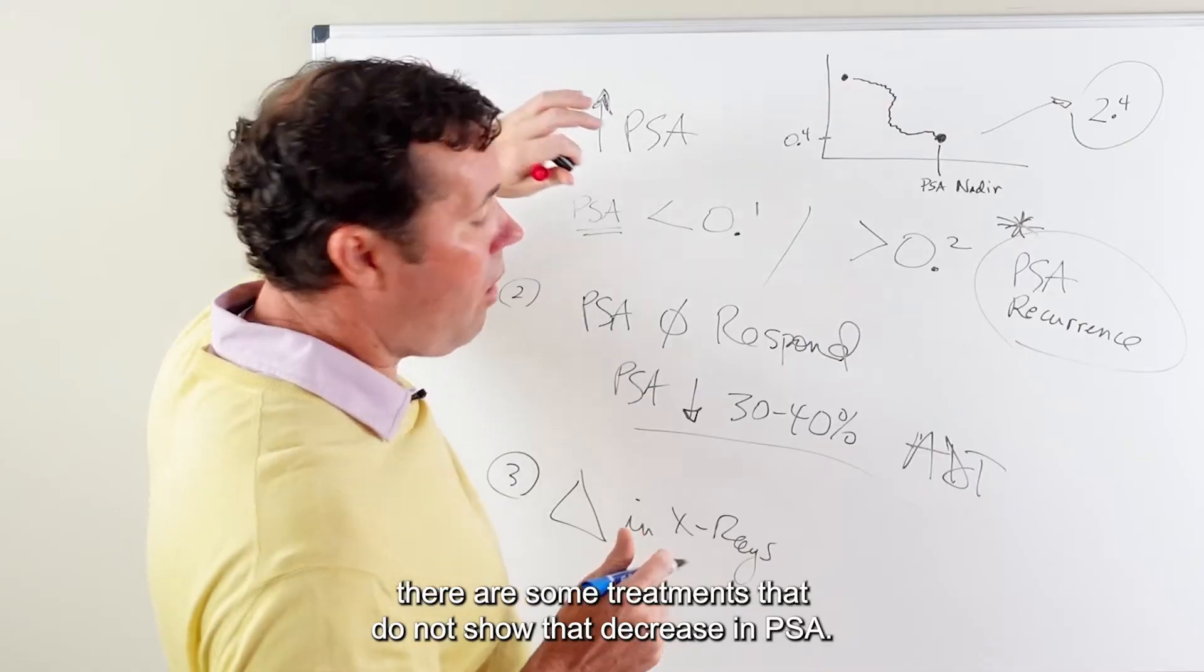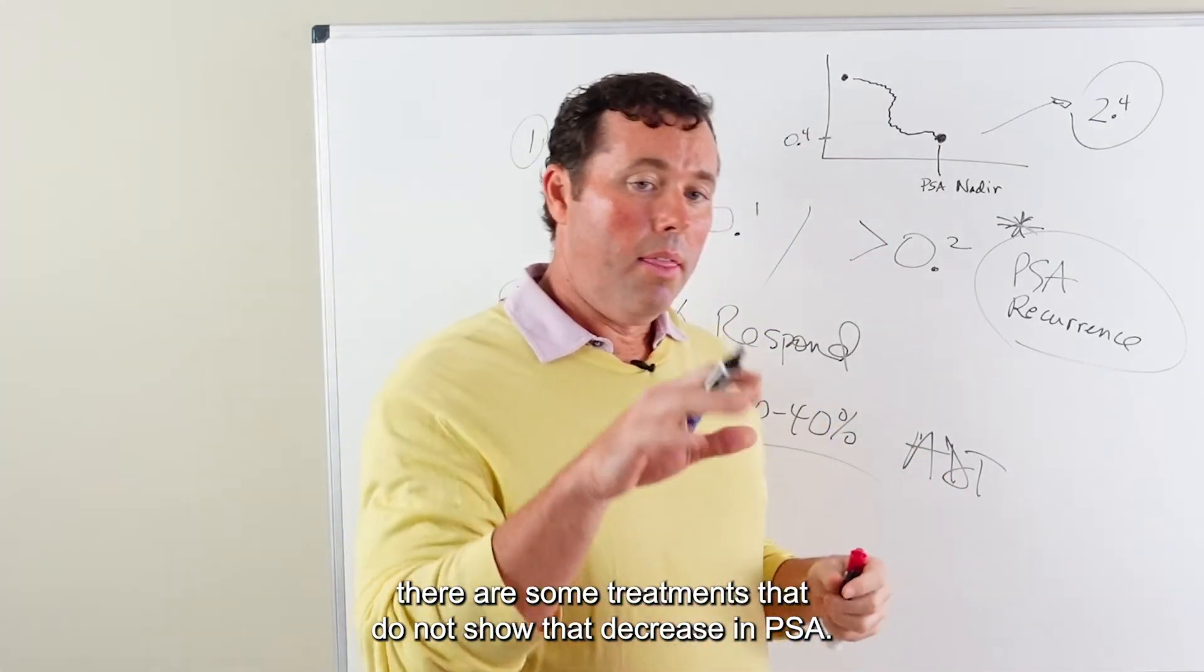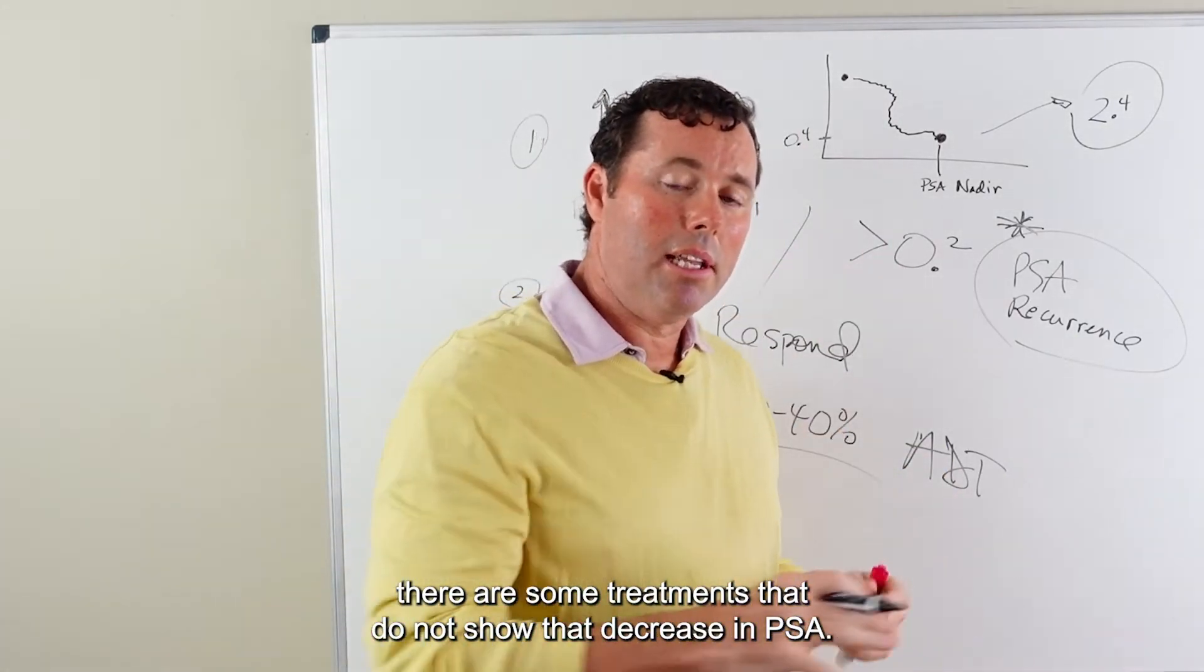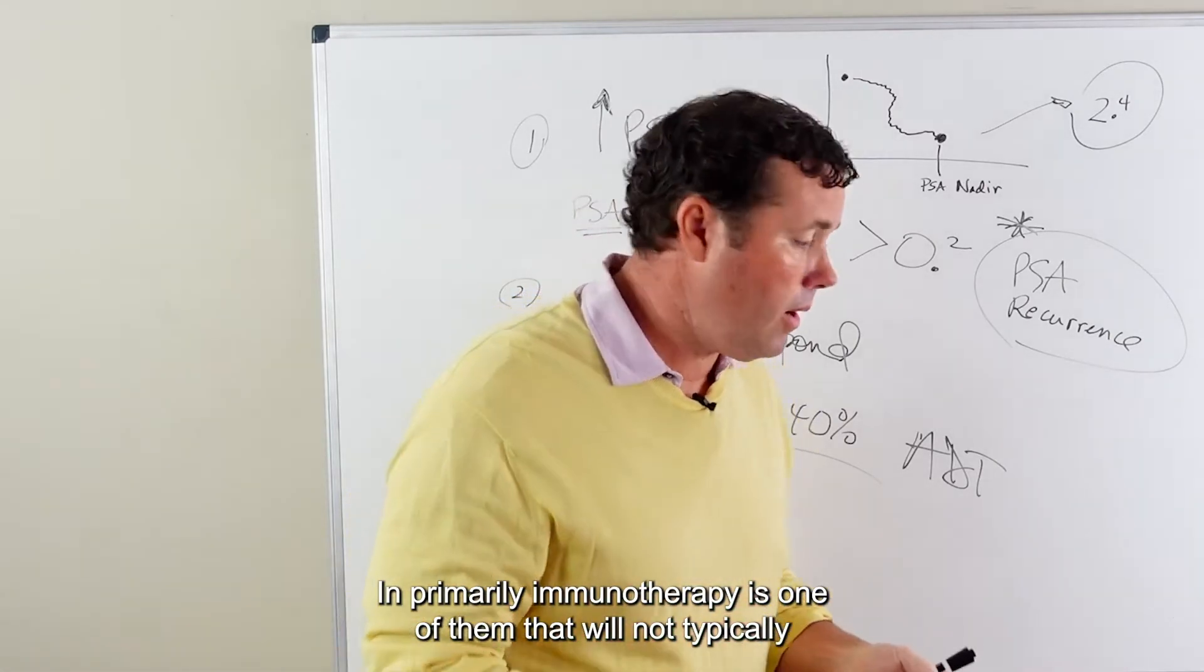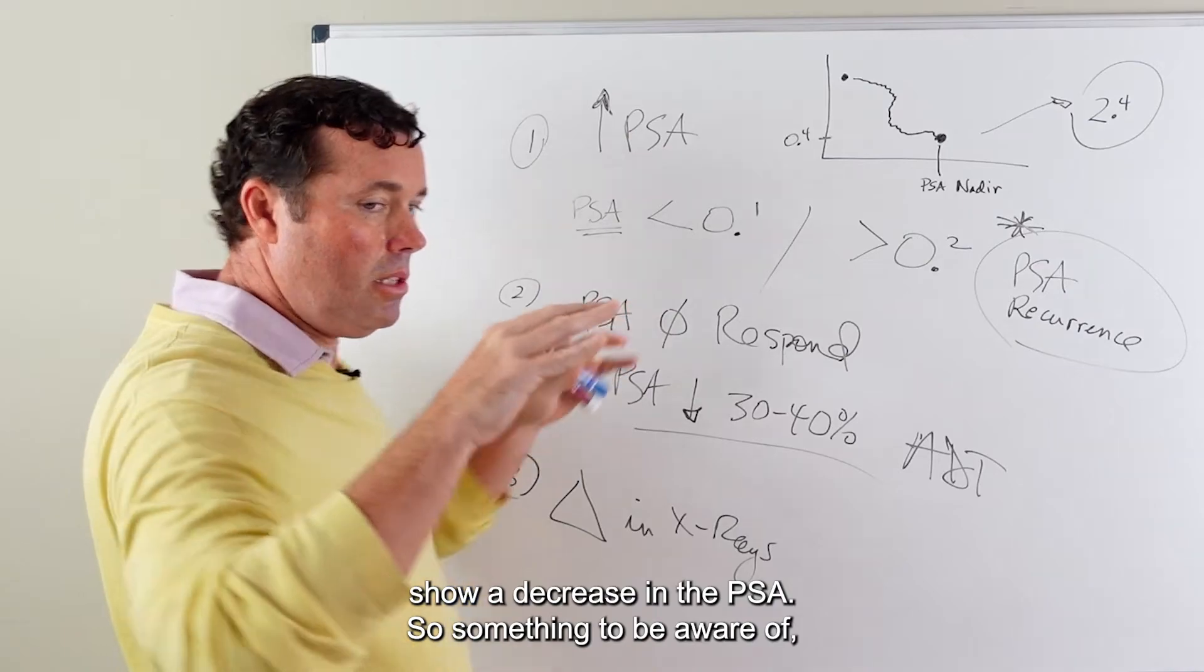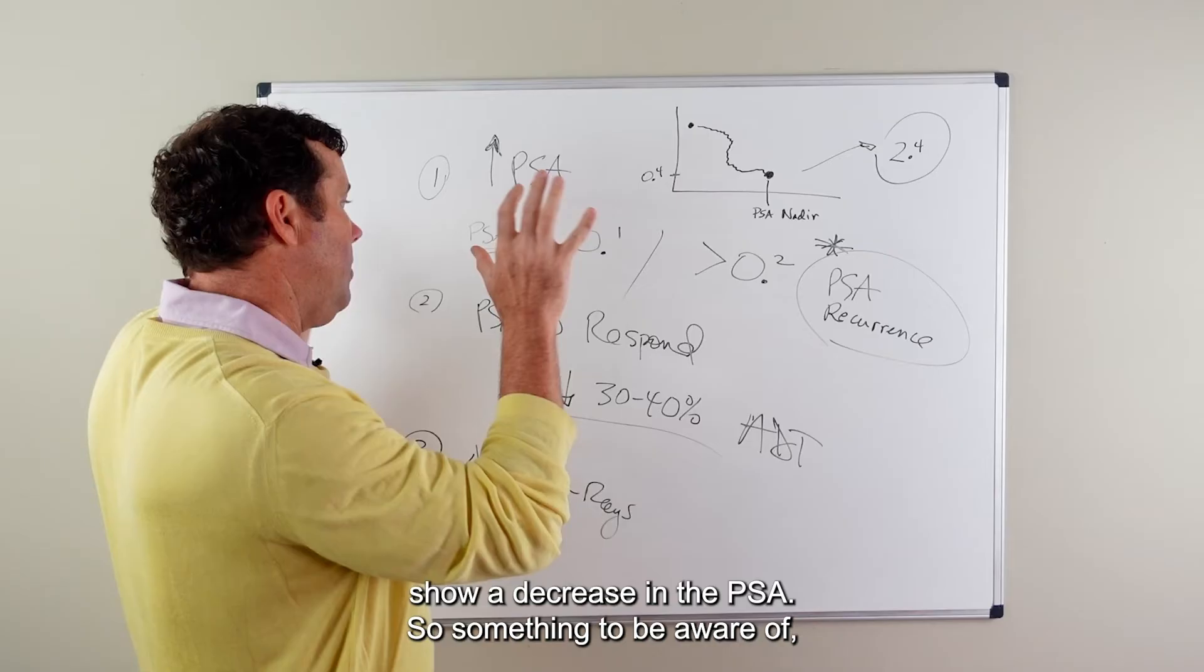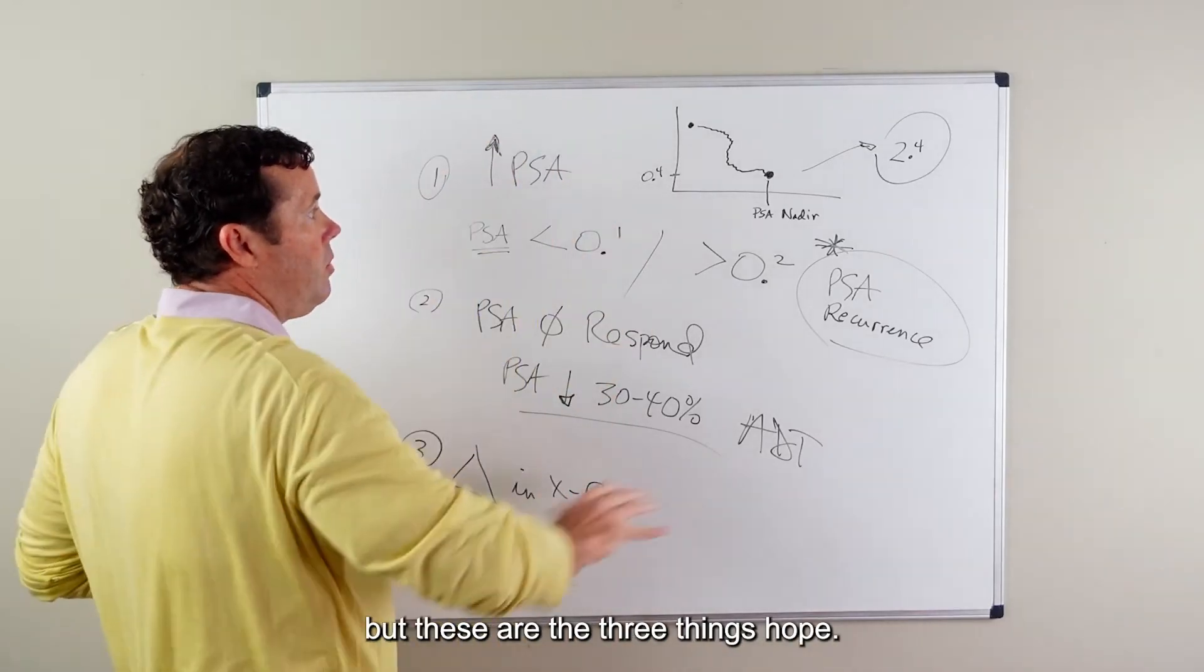So these are three ways you know if you're on the right treatment plan or if you may consider changing to other treatments. There are some treatments that do not show that decrease in PSA and primarily immunotherapy is one of them that will not typically show a decrease in the PSA. So something to be aware of. But these are the three things.